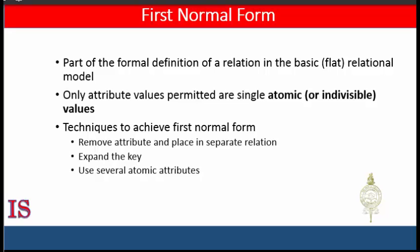For example, in an employee relation, if there is a possibility that an employee might have more than one child, then you need to decompose that relation — take the children attribute out and convert it into another relation. The only attribute values permitted by first normal form are single atomic or indivisible values.